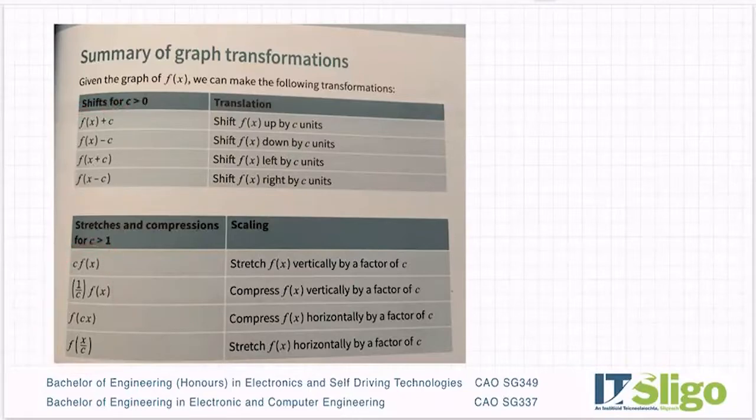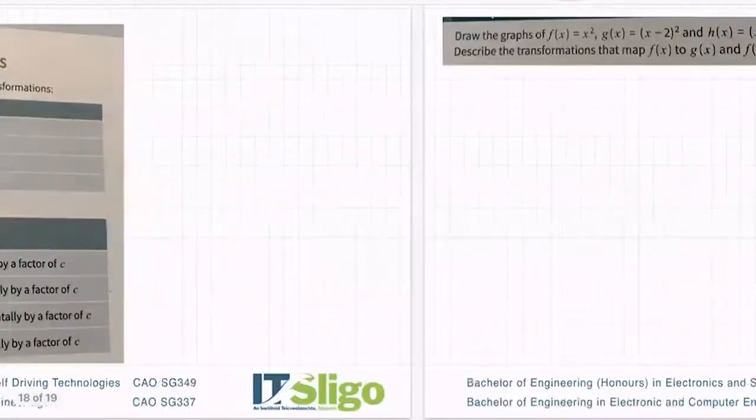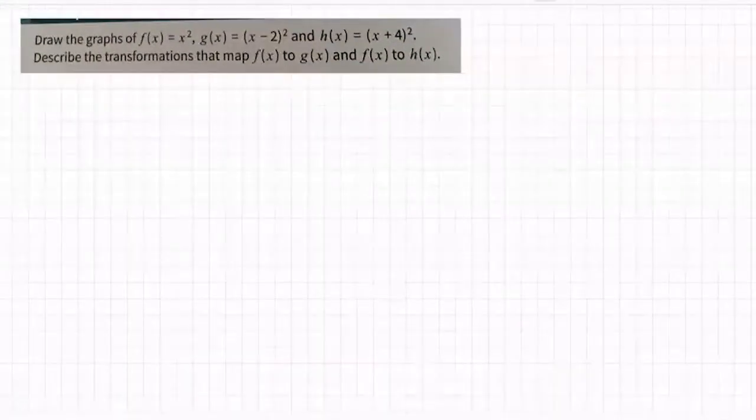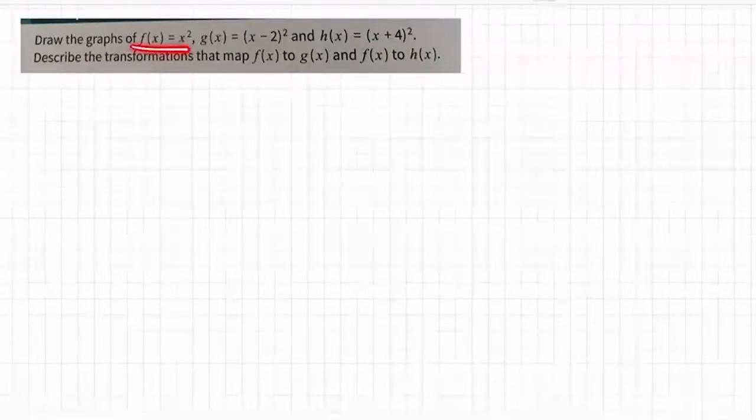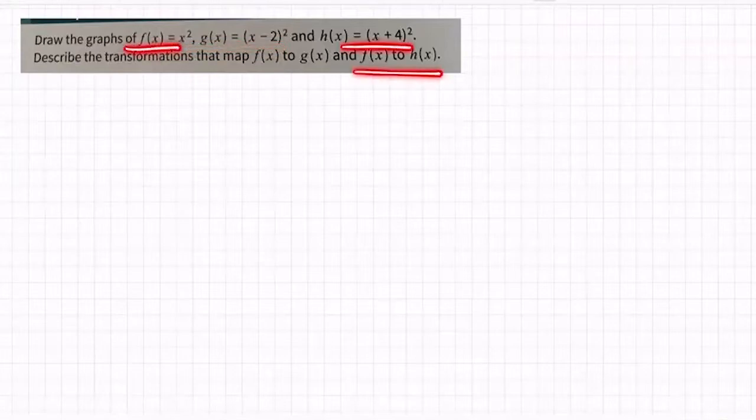Now it's not the end of the day if you haven't done this before or you've forgotten it, because you can work it out on your calculator. To give you an example of the type of question this handles: draw the graphs of f(x) = x², g(x) = (x - 2)², h(x) = (x + 4)². Describe the transformations that map f(x) to g(x), so in other words what's the relationship between them, and then f(x) to h(x).